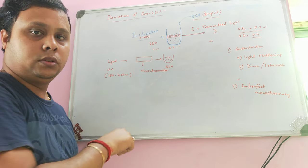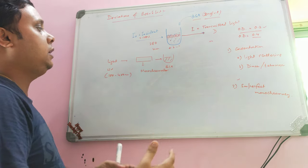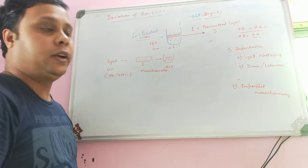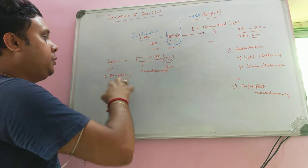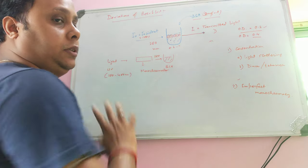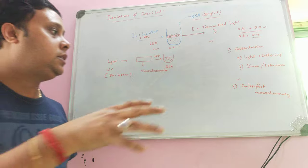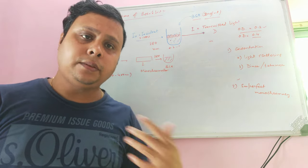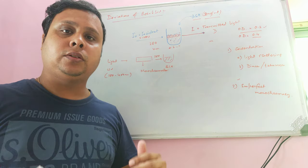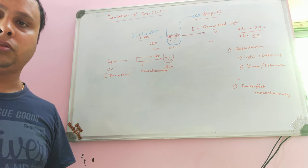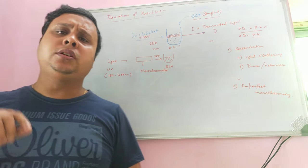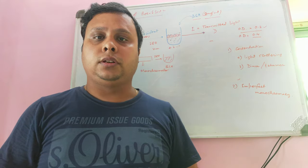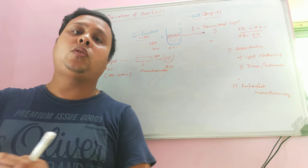In a spectrophotometer or colorimeter, we set the wavelength to 280 nm and the monochromator programs itself to transfer only 280 nm to the sample, absorbing all other wavelengths. However, with imperfect monochromacy, if the monochromator has an error, it may transfer not only 280 nm but also 270 nm, 290 nm, or 300 nm. You are entering 280 nm but the monochromator is actually passing polychromatic light — multiple wavelengths — to the sample.